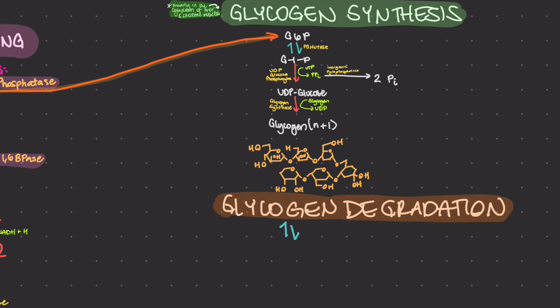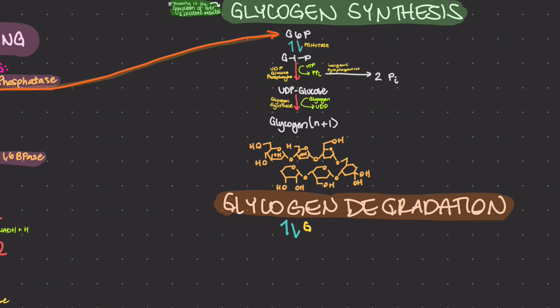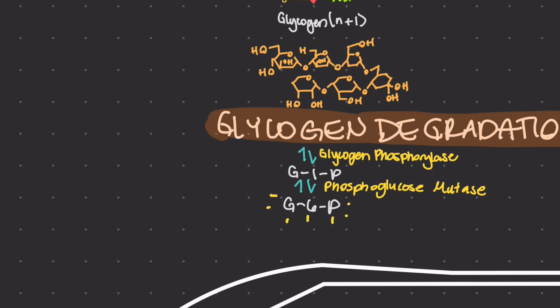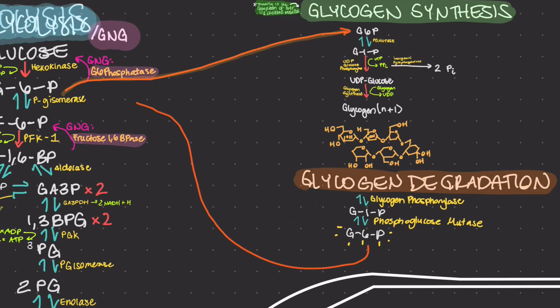The enzyme glycogen phosphorylase cleaves the alpha-1,4 glycosidic linkages of the glycogen polymer, releasing glucose-1-phosphate. Then, the enzyme phosphoglucomutase converts glucose-1-phosphate to glucose-6-phosphate. Glucose-6-phosphate can then be shuttled back over to glycolysis when there is a need for energy to be broken down.